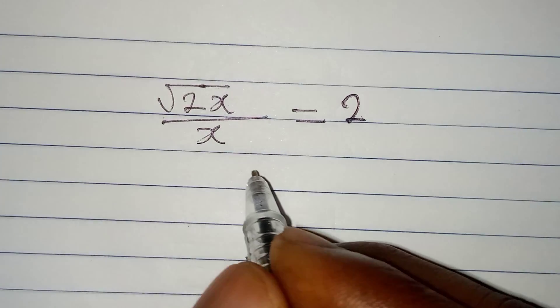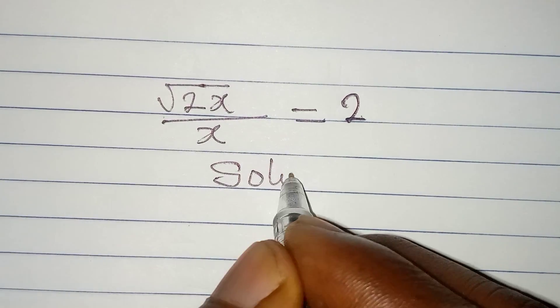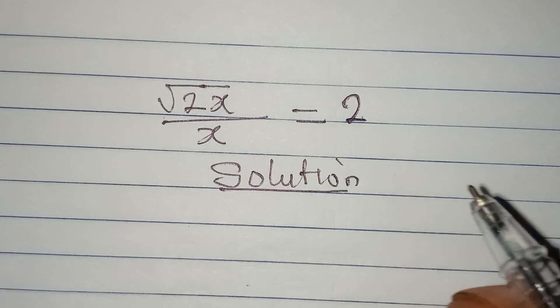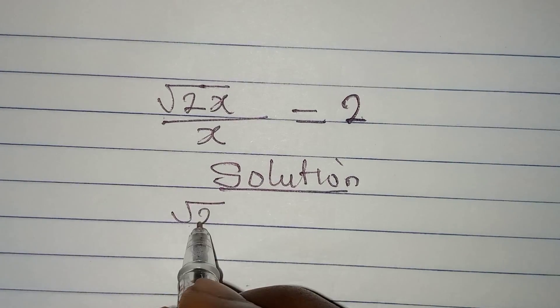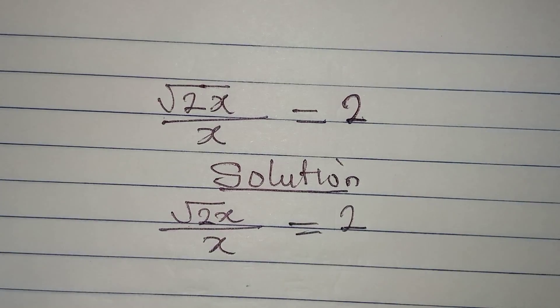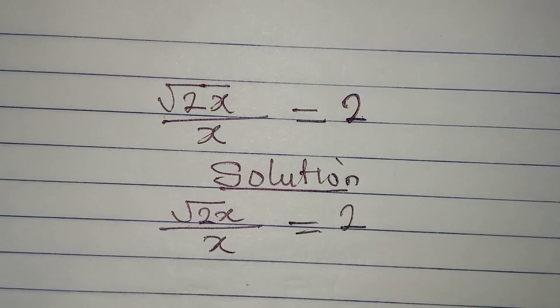Hello everyone, let's provide a solution to this problem. This is very simple because again we have square root of 2x all over x which is equal to 2. Now if you do not know the first step to take, then you will find it very difficult.